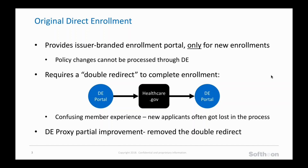In addition, Original Direct Enrollment requires what we call a double redirect. The member starts the application on the issuer's branded portal, but as they get into the more complex eligibility questions — like questions around income and family members — they actually get ported over to healthcare.gov to answer those questions. Once they complete the eligibility section and get a determination by CMS, they're ported back to the issuer's portal for plan selection. It's a very confusing member experience, and a lot of applicants often got lost in the process, staying on healthcare.gov to finish the application.